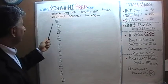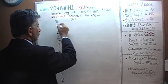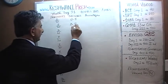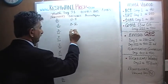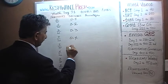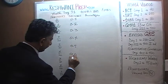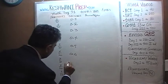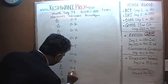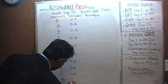1 tenth in decimal form is just 0.1. 2 tenths is 0.2. 3 tenths is 0.3. 4 tenths is 0.4. 5 tenths is 0.5. 6 tenths is 0.6. So far so good — 0.7, 0.8, 0.9, and 10 over 10 is just 1.